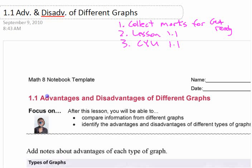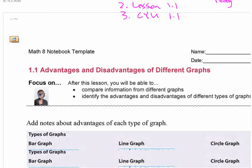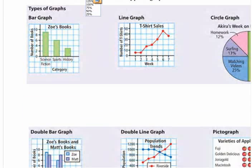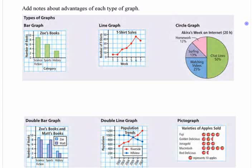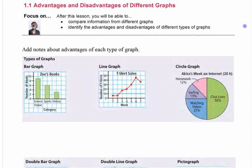This first unit — you did the get ready last time — is about different types of graphs that you may have made in the past, and advantages and disadvantages of each of those types of graphs, and misrepresenting data. You're going to learn how to misrepresent data and critique data that you see presented. More often in real life, what you have to do is read graphs, think about whether it's true, think about whether it's presented in a fair way. So that's why some of the things in grade 8 are the way they are. The first thing is advantages and disadvantages of different graphs.